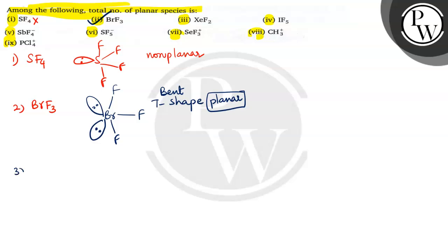So go for the third one. Third one is XeF2, xenon difluoride. Xenon difluoride SP3d hybridization and it is linear in shape with 3 lone pairs of electrons on the xenon center line. The linear shape is also planar structure which is also planar.